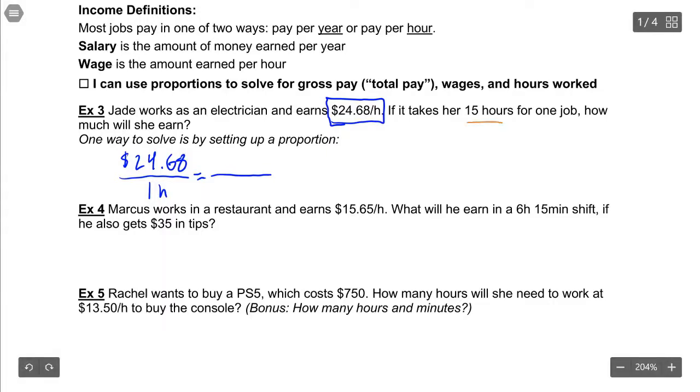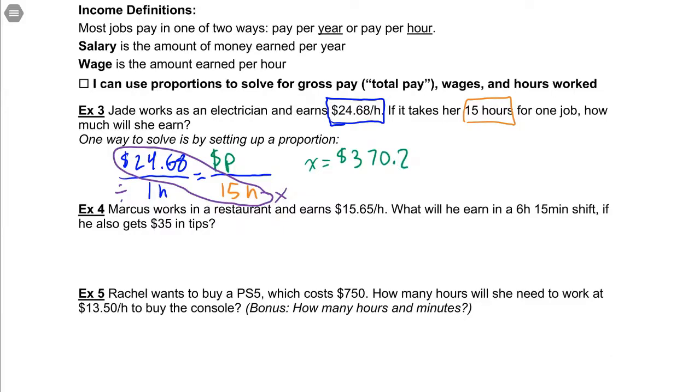Now we know that they are paid for 15 hours, so we're going to match our hours underneath, and our pay is our unknown, so that's going to go up top. All we need to do is cross multiply, so we multiply the two numbers on the diagonal that we know, divide by the number outside. In this case, as with all unit rates, dividing by one doesn't actually change anything, so effectively all that we need to do is $24.68 times 15 in your calculator, and you get x equals $370.20.